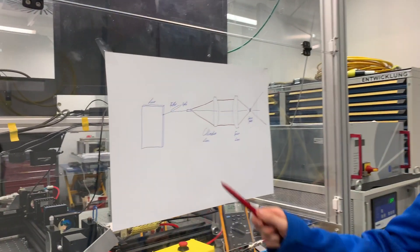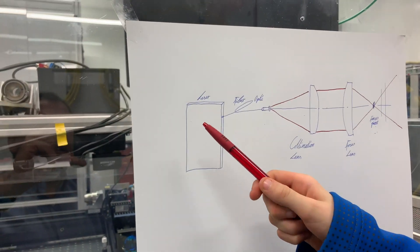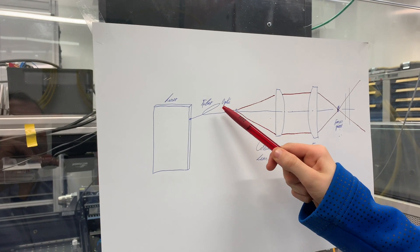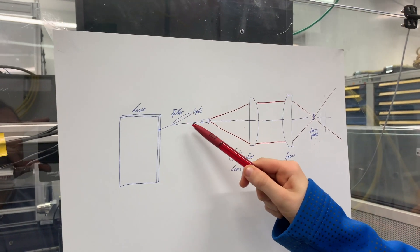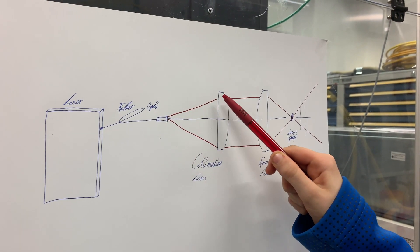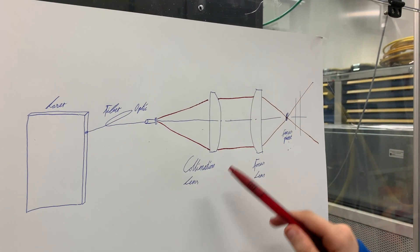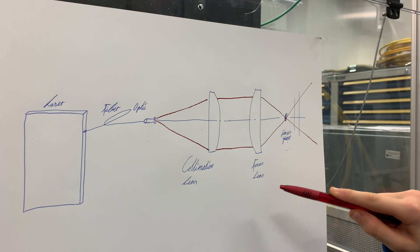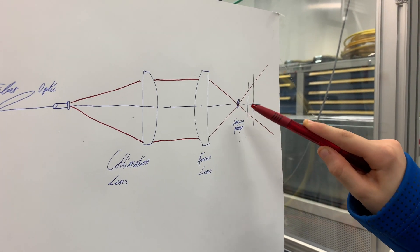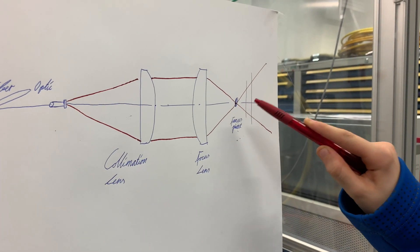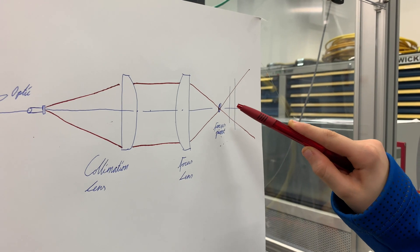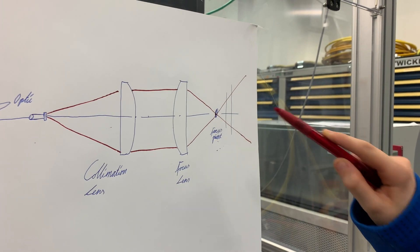This is my experiment setup. Here's the laser that generates the laser beam, and then the fiber optic guides the laser to the exit point. The laser goes like that and comes to the collimation lens, which makes it parallel. Then the focus lens focuses to one point, where this has the highest amount of energy to burn through.